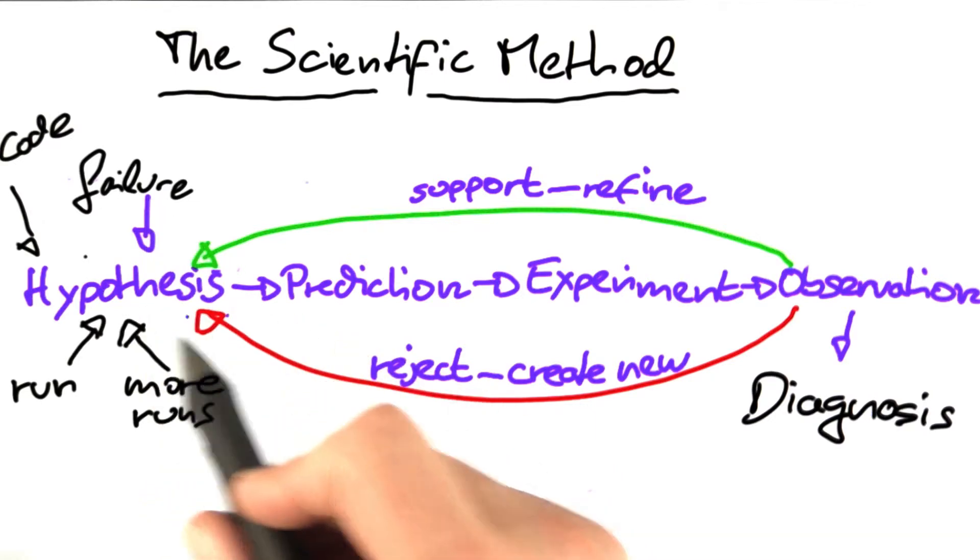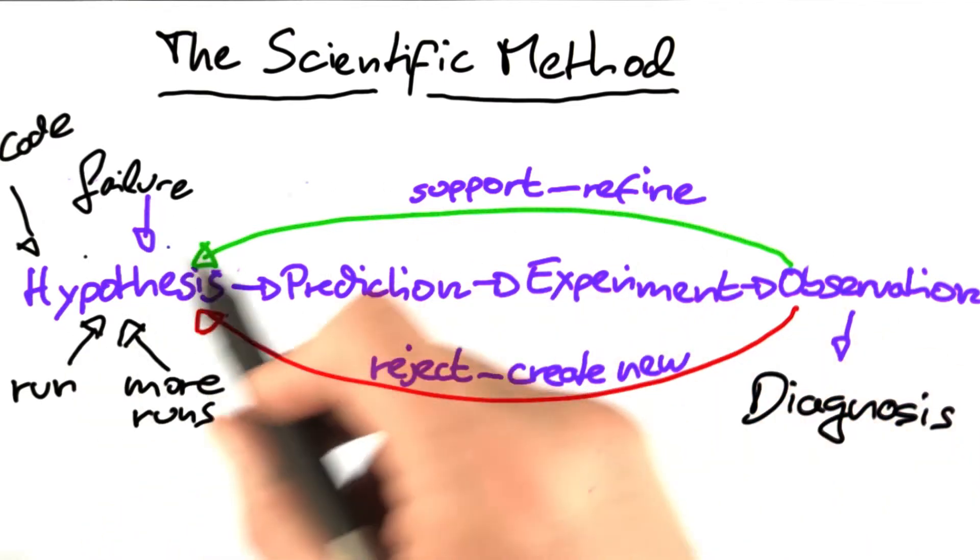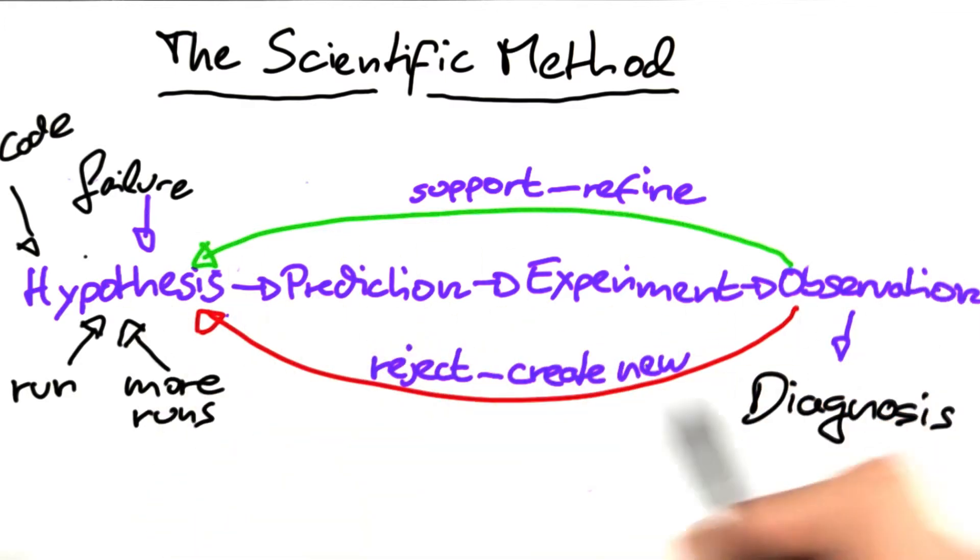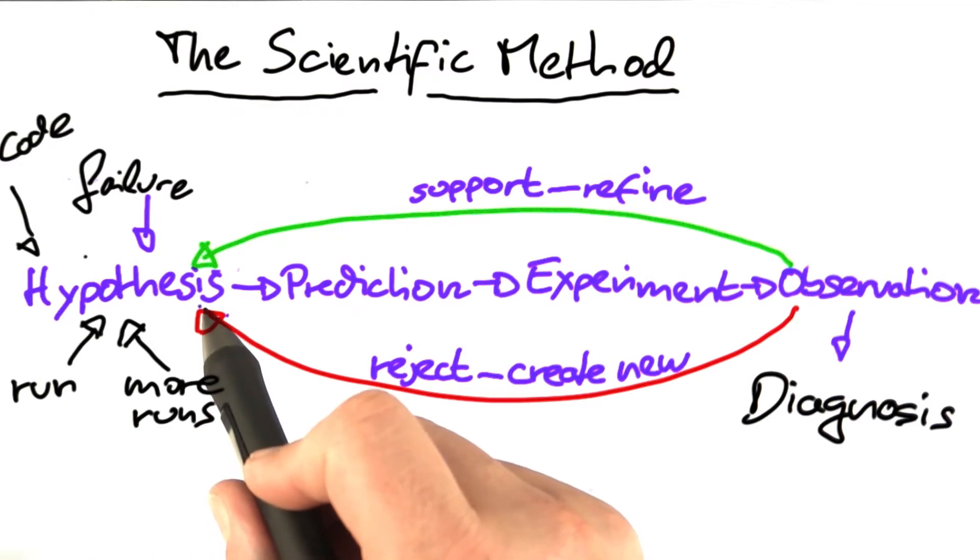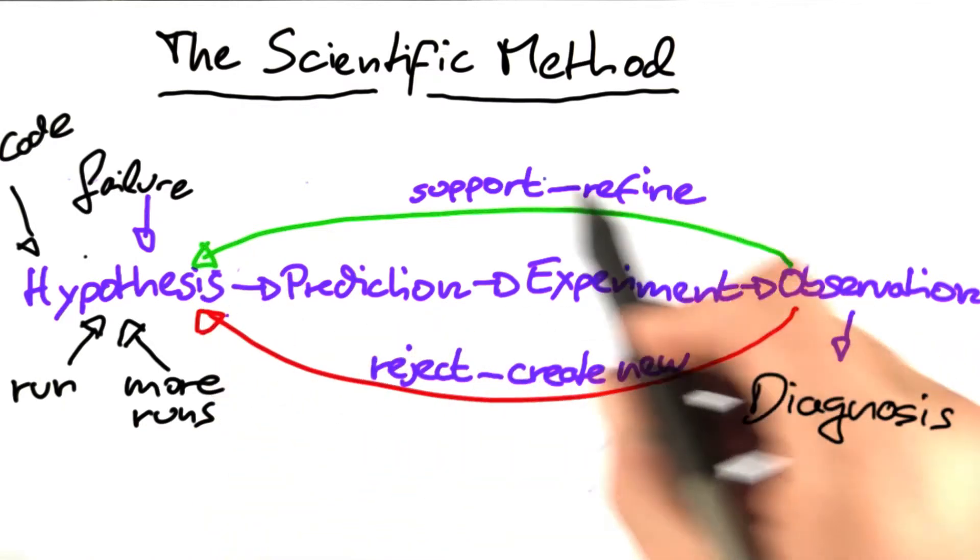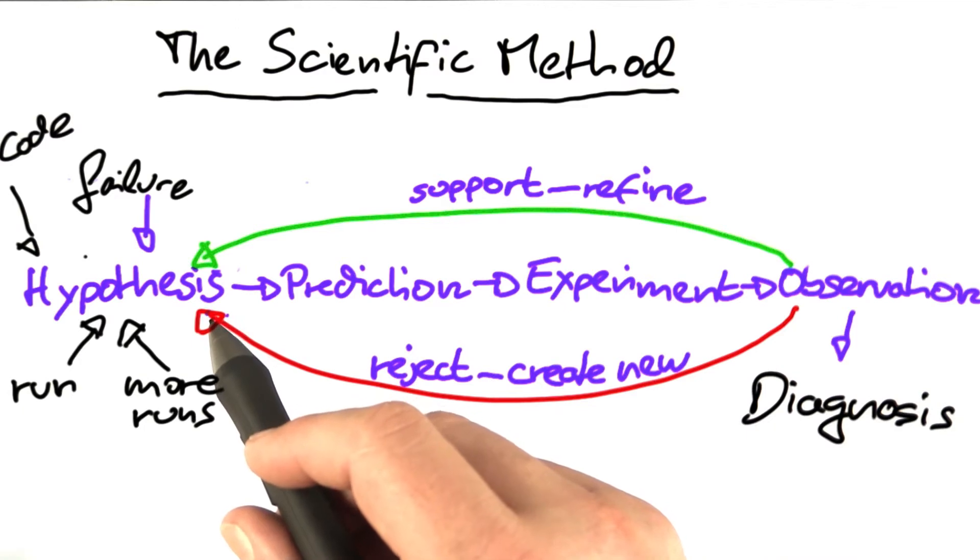Note that there are many ways to come up with an initial hypothesis. There are also many ways to refine the hypothesis and reject the hypothesis. Note that there may be multiple hypotheses to start with, and also, of course, during the scientific method, you may come up with different hypotheses.